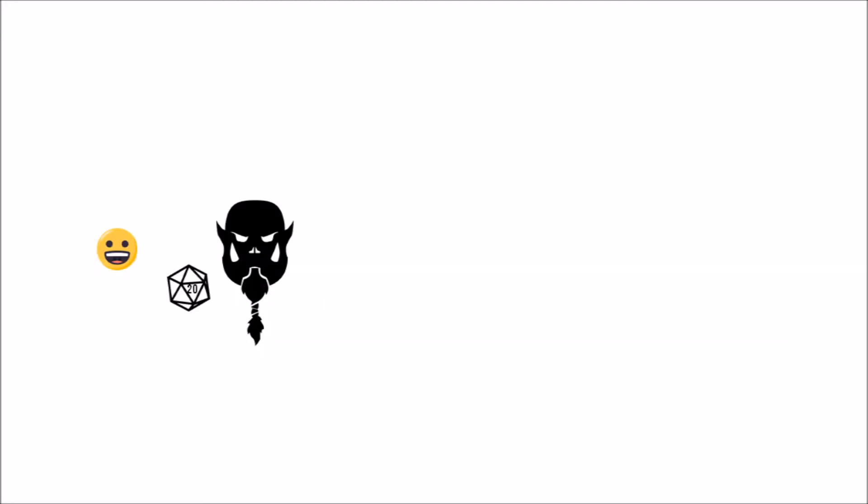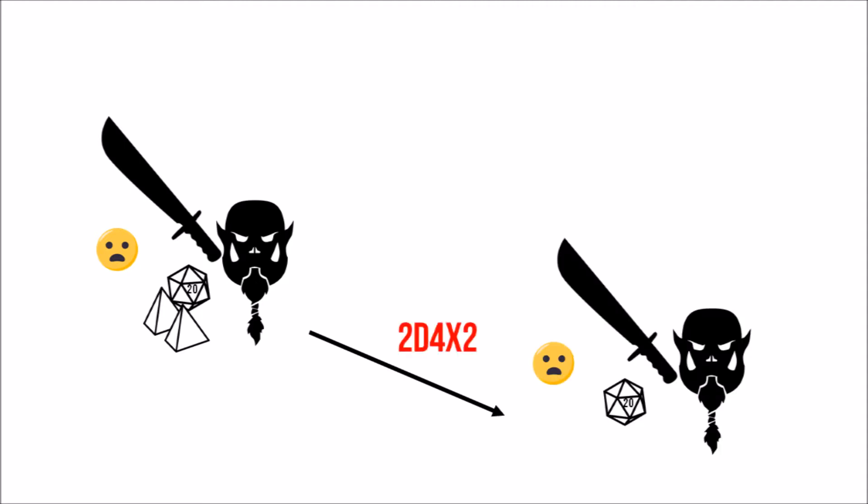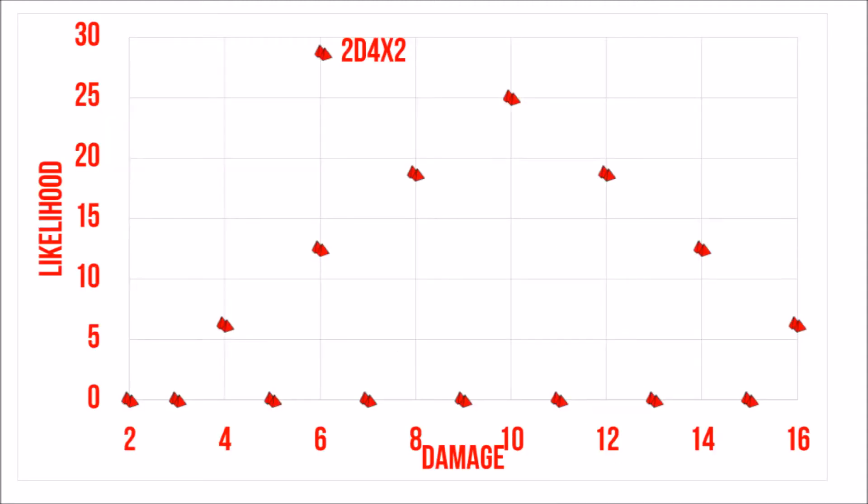Let's take another example: the Pathfinder falchion, which ordinarily deals 2d4 damage. Under the mistaken interpretation of multiplying the damage, your critical hit would roll anywhere from 4 to 16 points of damage in the following histogram.